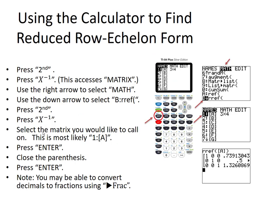This is a special form that helps us solve systems, and that's why we're concerned with it. Now we're going to use the calculator to find reduced row echelon form of a particular matrix. I'm going to use the matrix that I've previously entered, and I'm only going to be doing the calculation part of this, not the entering of the matrix.